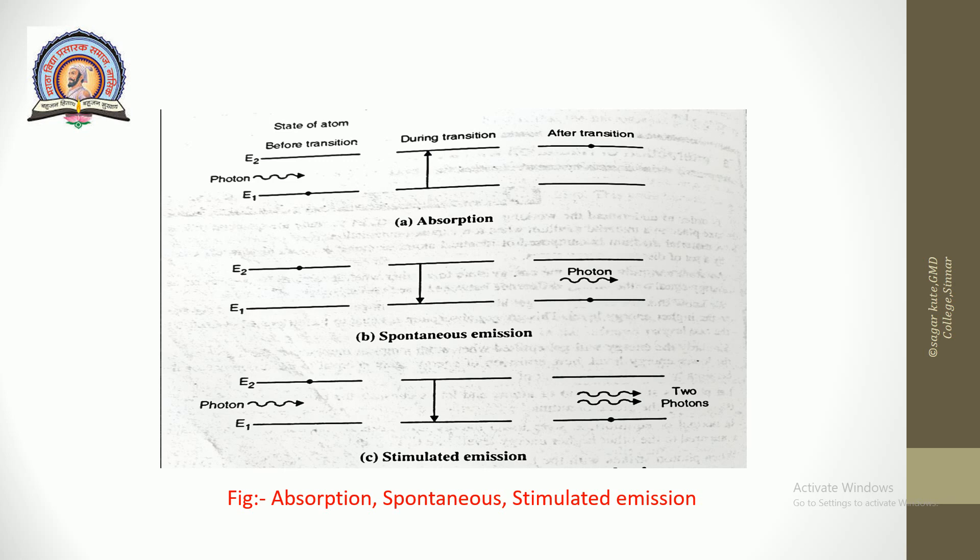Second characteristic: the process can be controlled from outside. Third characteristic: an important feature of stimulated emission is that the number of photons goes on multiplying rapidly under the influence of one incident photon. A second photon is emitted.